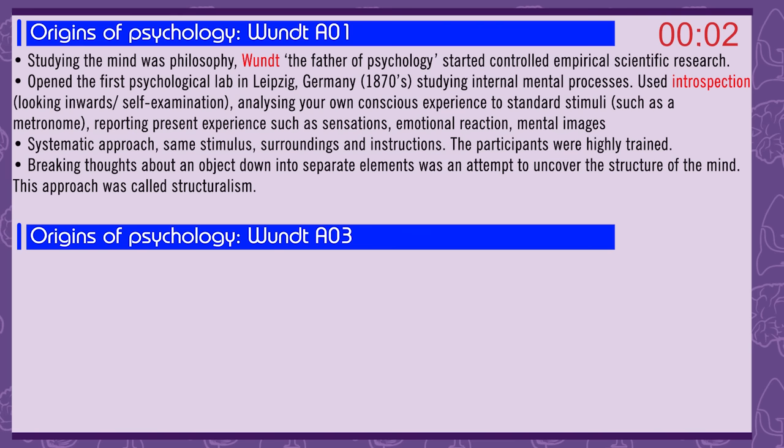Studying the mind was philosophy. Wundt, the father of psychology, started controlled empirical scientific research. He opened the first psychological lab in Leipzig, Germany in the 1870s, studying internal mental processes. He used introspection — looking inward, self-examination — analysing your own conscious experience in response to standard stimuli such as a metronome.